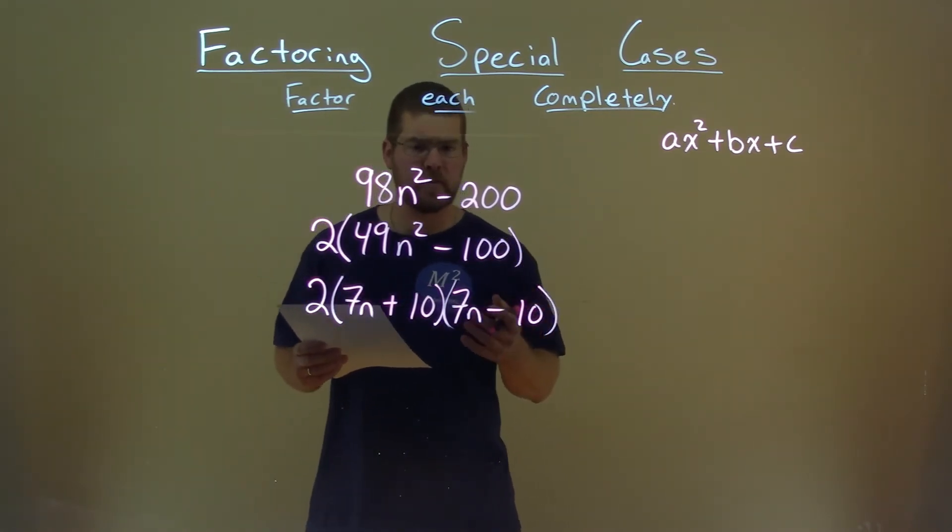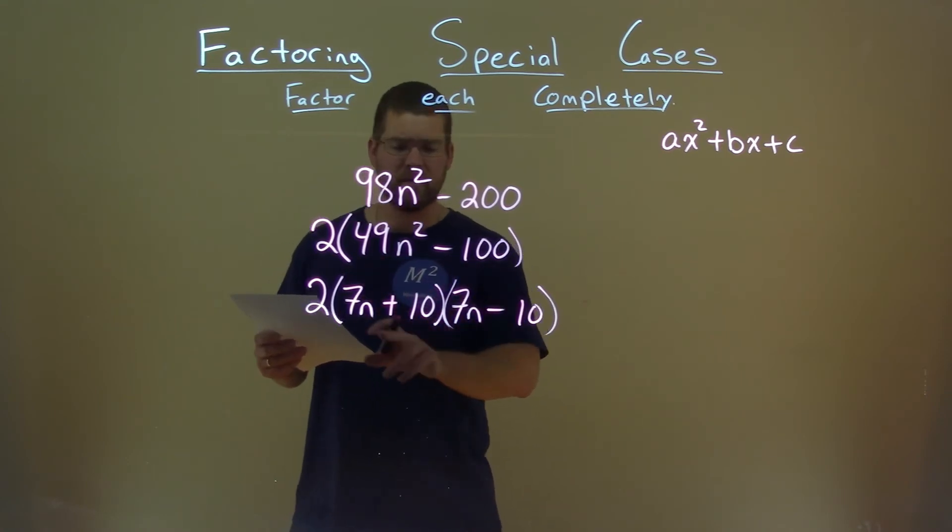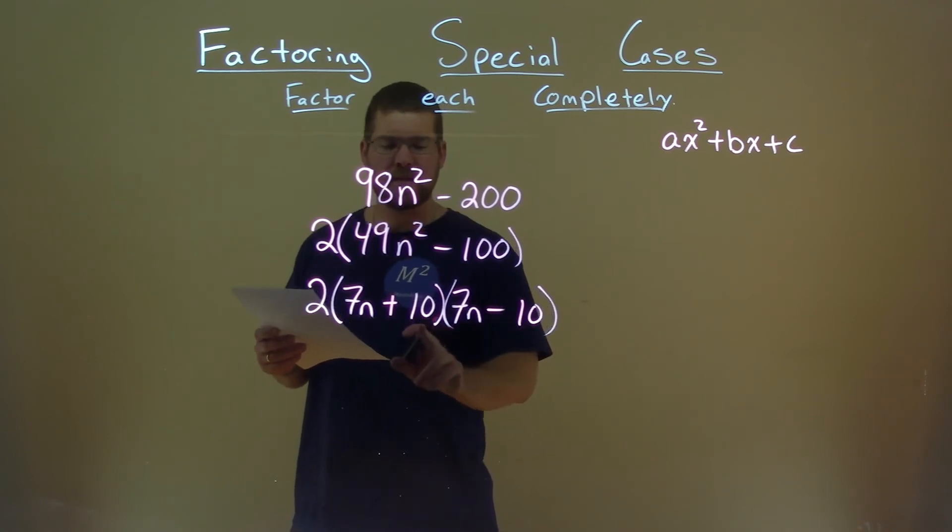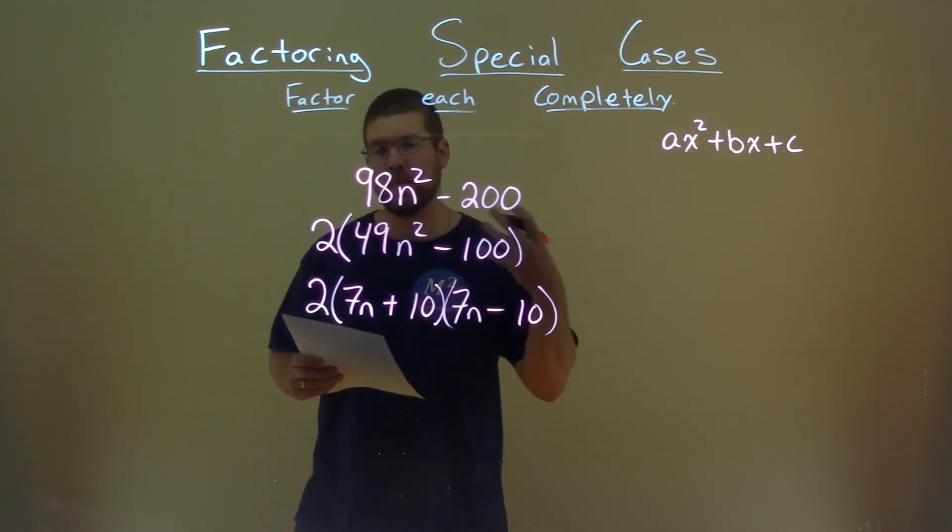But what about the B value, the inside? It's supposed to be 0. Well, this is where this becomes kind of nice. 7N times negative 10 is negative 70N. 10 times 7N is positive 70N. Add them together, it becomes 0.